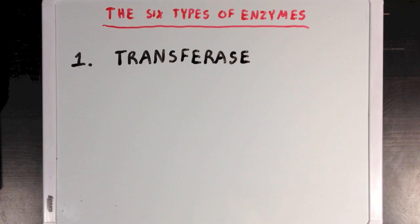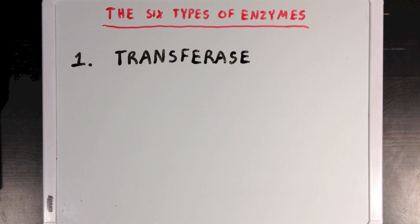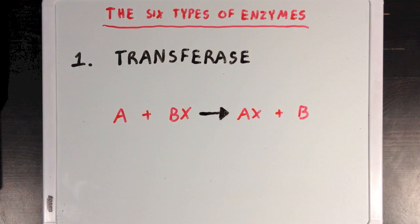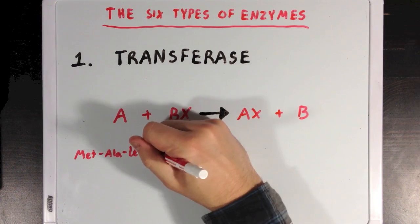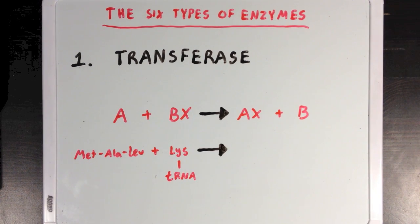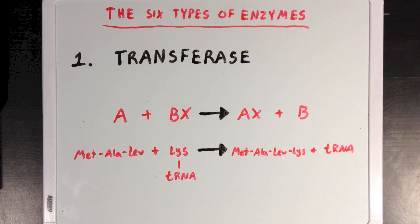Our first group is the transferase group. The basic reaction that transferases catalyze involves moving some functional group X from molecule B to molecule A. A great example occurs during protein translation, where amino acids bound to tRNA molecules are transferred over to the growing polypeptide chain.